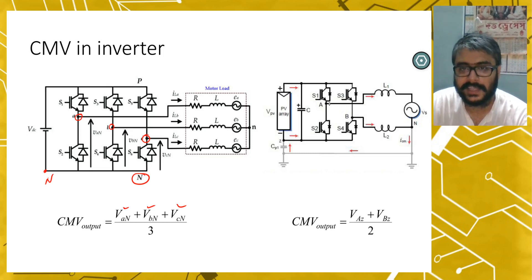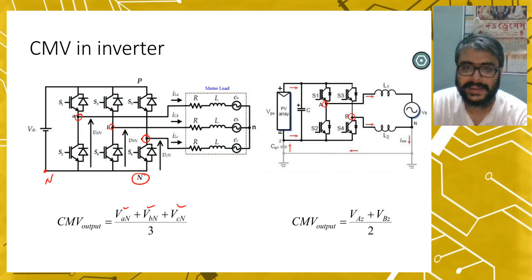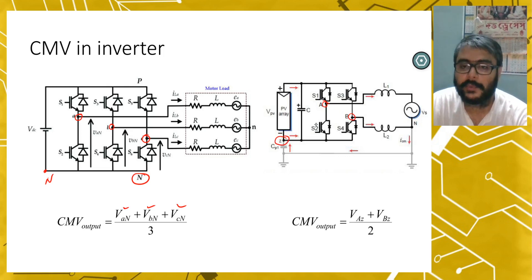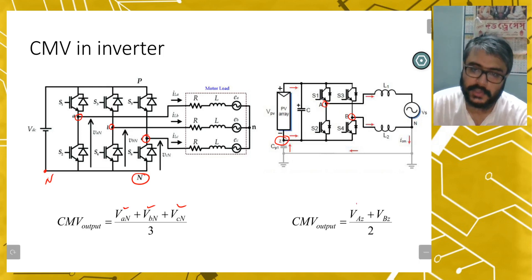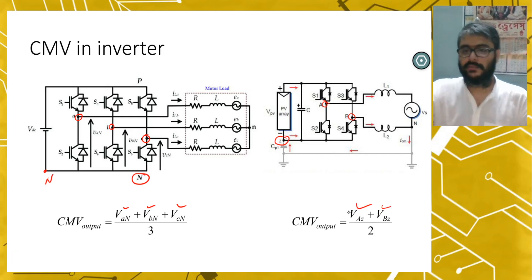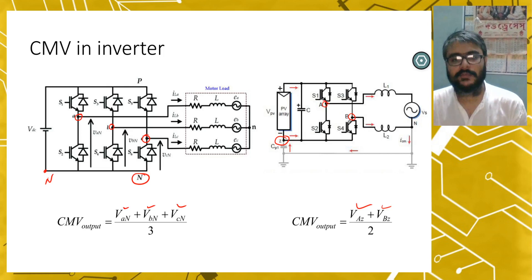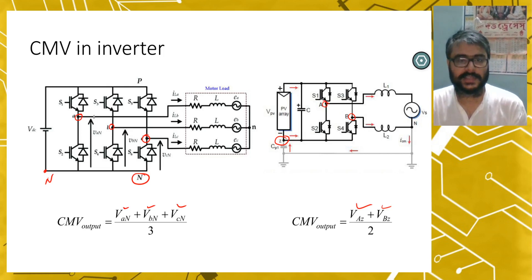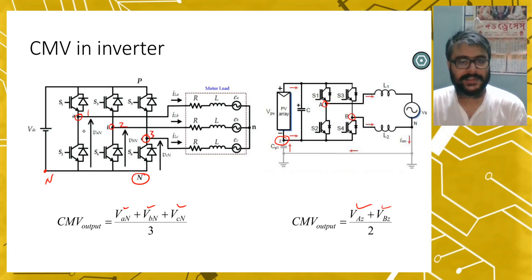In a single-phase inverter, there are terminals A and B as the output terminals, and Z is the common point. The voltage between these two common points will be VAZ and VBZ. So CMV output equals (VAZ plus VBZ) divided by 2. In a single-phase inverter there are two output terminals, and in a three-phase inverter there are three output terminals, so you add all output terminal voltages and divide by three.